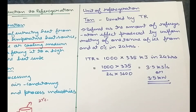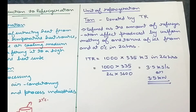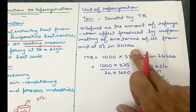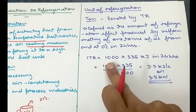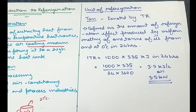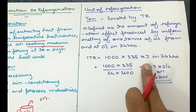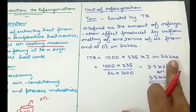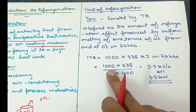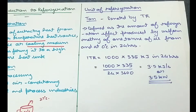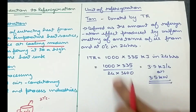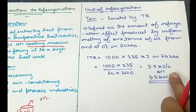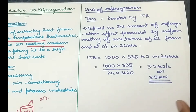So if one ton of ice kept at zero degrees Celsius melts in 24 hours, we call it one ton of refrigeration. One ton is 1000 kilograms, so it is 1000 kilograms multiplied by 335 kilojoules per kilogram — which is the latent heat of ice — divided by 24 hours converted to seconds (24 × 3600). When you calculate this, you get 3.5 kilojoules per second, or 3.5 kilowatts. So one ton of refrigeration equals 3.5 kW.